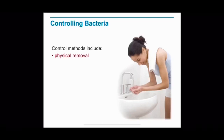Firstly, by physical removal — washing hands or other surfaces with soap under running water doesn't kill pathogens, but it does help dislodge both bacteria and viruses. Secondly, the usage of disinfectant chemical solutions that kill bacteria can be used to clean bathrooms, kitchens, hospital rooms, and other places where bacteria may flourish. Thirdly, food should be stored at low temperatures, like those inside a refrigerator, which will slow down bacterial growth and keep most foods fresher for longer.